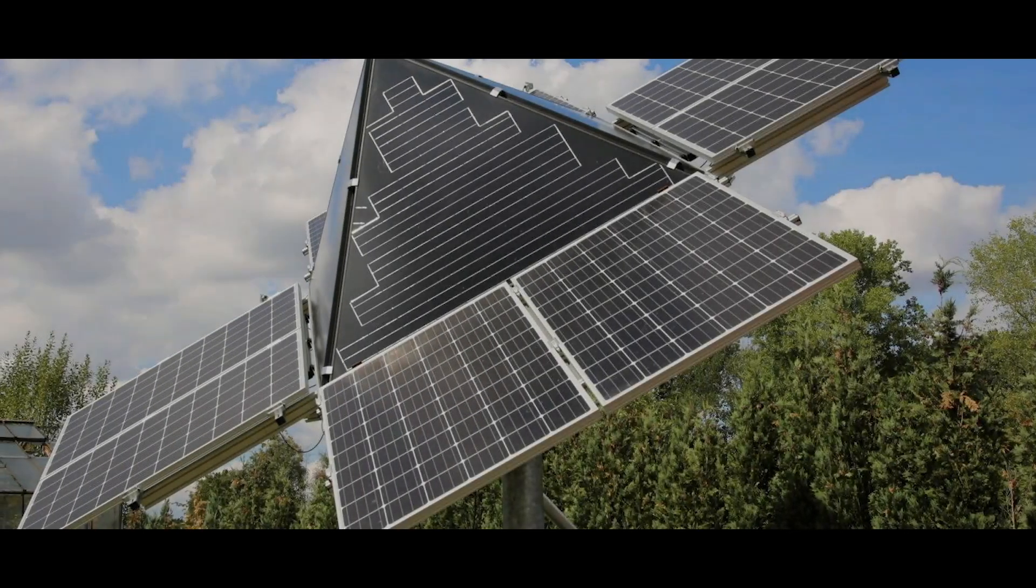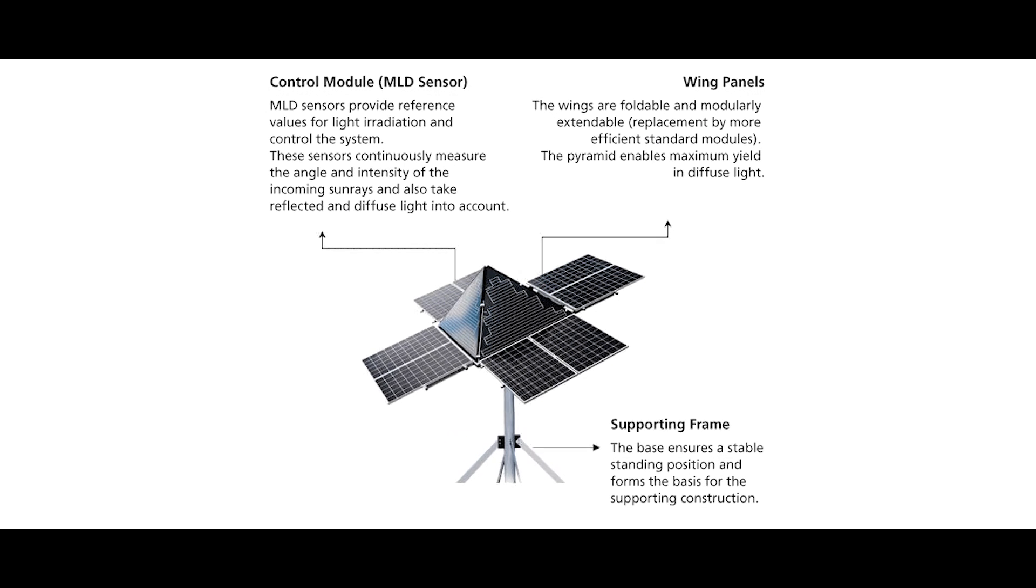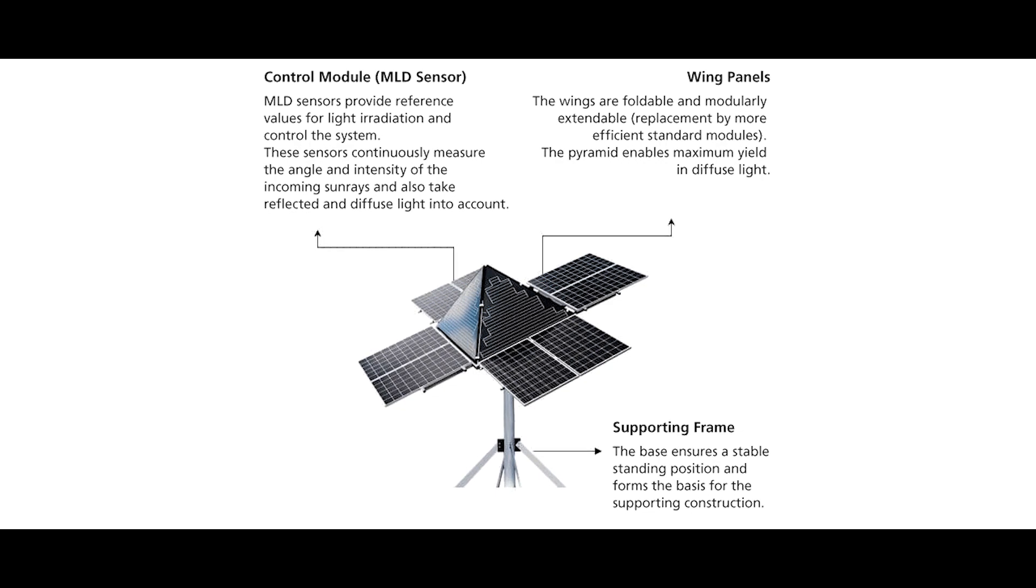The solar funnel consists of four parts: a support structure, solar wing panels, a photoactive pyramid in the center, and an intelligent control system.